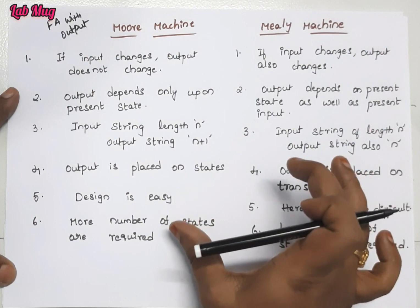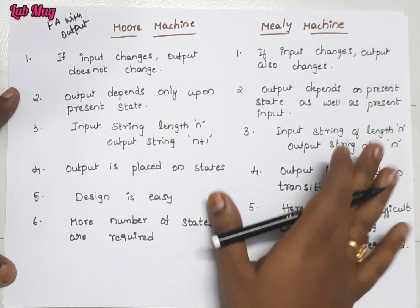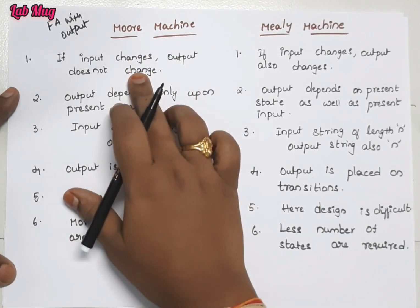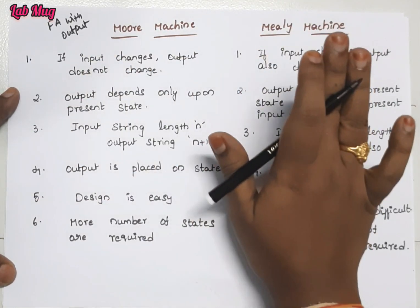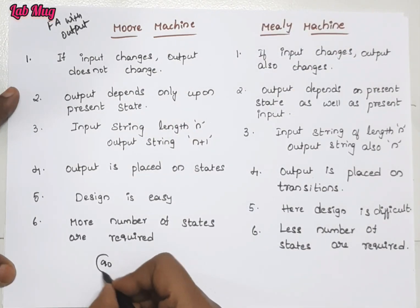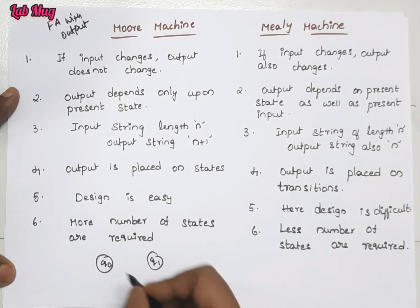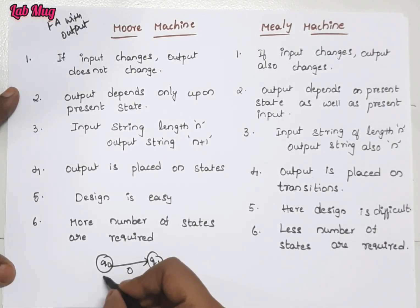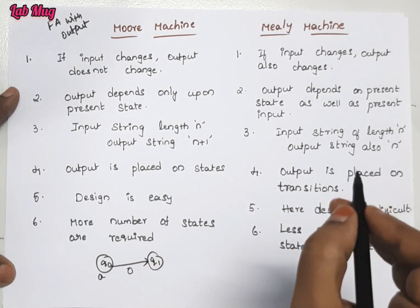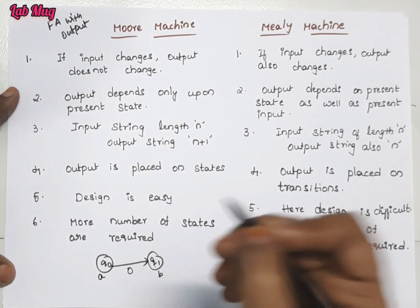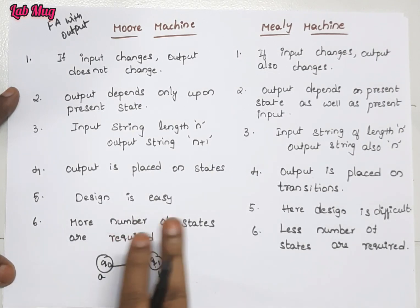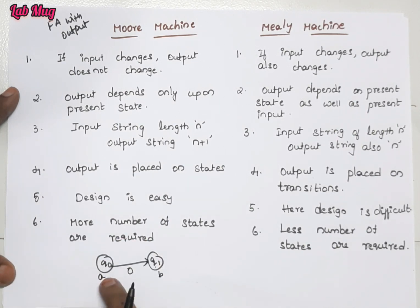The difference between them is: in Moore machine, whenever we are in a state, even if the input changes, the output does not change. That is, whether we are in state q0 or state q1, during transition, q0 gives a common output 'a' for any transition, and q1 gives a common output 'b'. So 0-input or 1-input, from q0, the output remains the same. If input changes, output does not change in Moore machine.